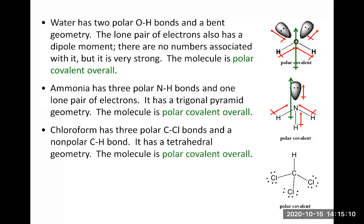Chloroform (CHCl3) has polar C–Cl bonds, so we draw the polarities with dipole moments — chlorine is more electronegative than carbon, so the arrows point from carbon to each chlorine. The CHCl3 molecule has a tetrahedral shape. All three dipole moments are oriented downward along the tripod legs, so they add up. Overall, chloroform is polar covalent with a net dipole going downward from carbon between the three chlorine atoms.